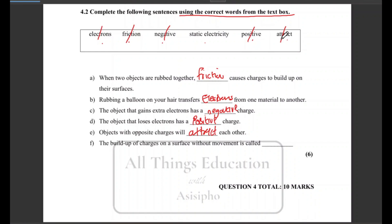Okay, then f) The build up of charges on a surface without movement is called what? Static electricity. Done.